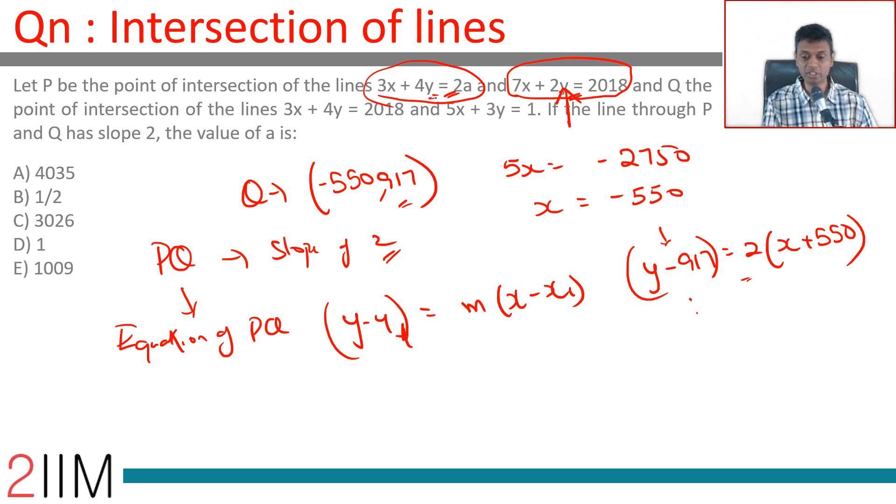The three lines we have—3x + 4y = 2a, 7x + 2y = 2018, and this line—all pass through P. The equation is 2x - y = -2017.